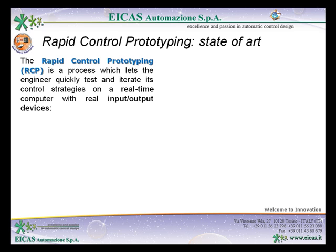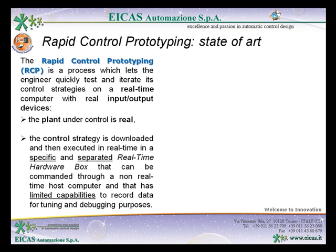Nowadays, the Rapid Control Prototyping, or RCP, is a process which lets the engineer quickly test and iterate its control strategies on a real-time computer with real input-output devices. The plant under control is real, and the control strategy is downloaded and then executed in real-time in a specific and separated real-time hardware box that can be commanded through a non-real-time host computer and that has limited capabilities to record data for tuning and debugging purposes.